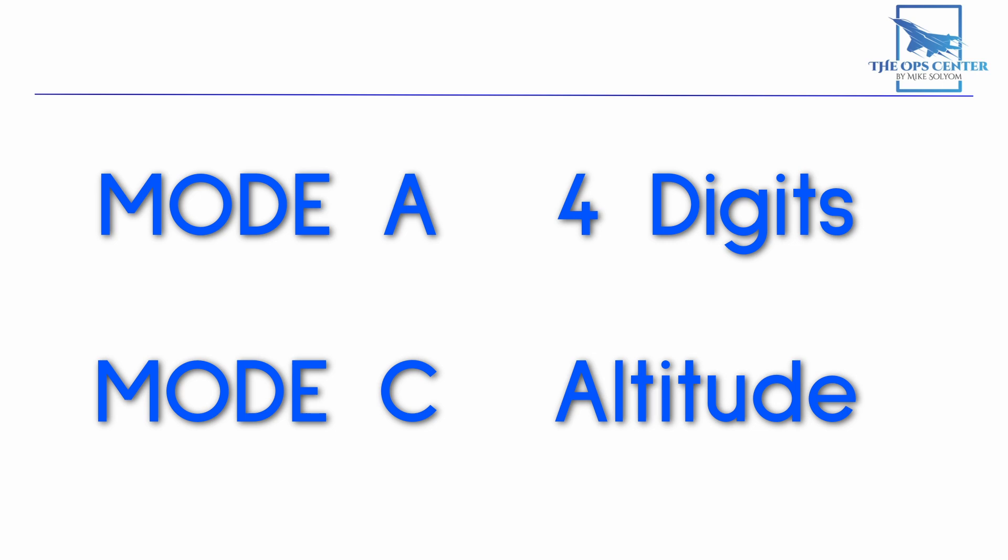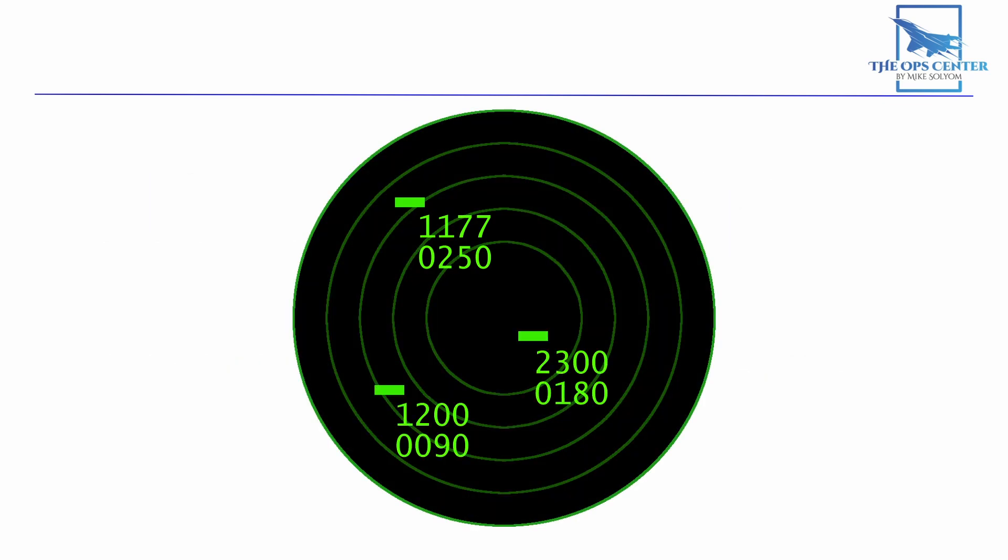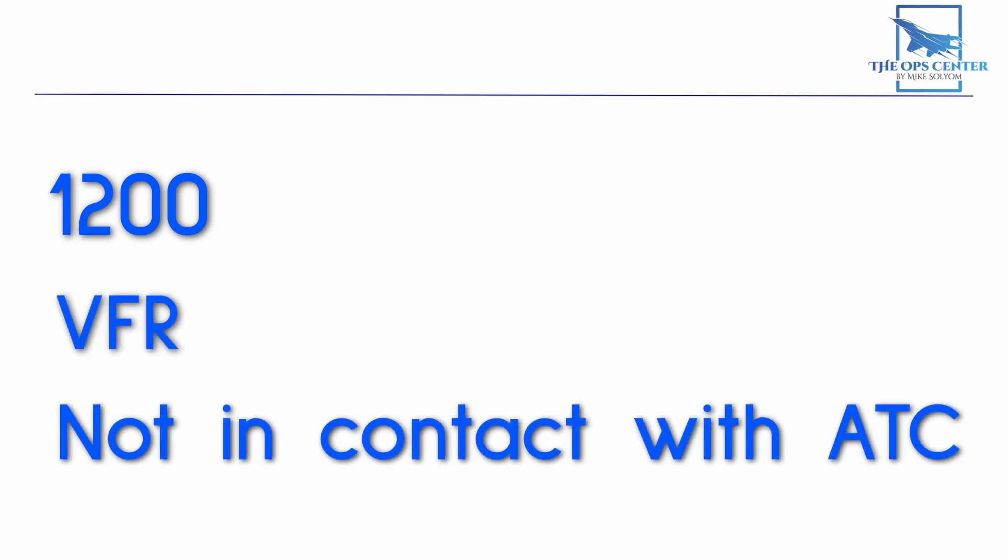With both A and C active, a controller would see a display like this, with the transponder code and an altitude for each contact that replies. This gives ATC the ability to assign a code to each aircraft to help organize their airspace. Every aircraft can get its own code, but there are a few special codes that are reserved. 1200 is one that's used in the US to indicate an aircraft is flying under visual flight rules and not directly in contact with ATC. So there might be multiple aircraft with this code in the air at once.